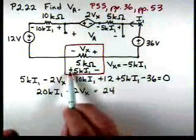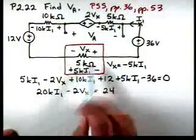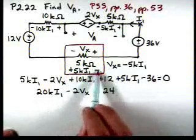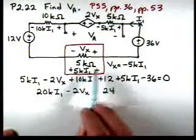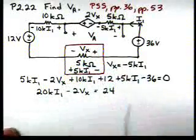Notice this voltage. We got this from Ohm's law. Current's flowing that way. It gives us a voltage 5Ki1 with that polarity. VX has the opposite polarity. So VX is equal to minus 5Ki1.